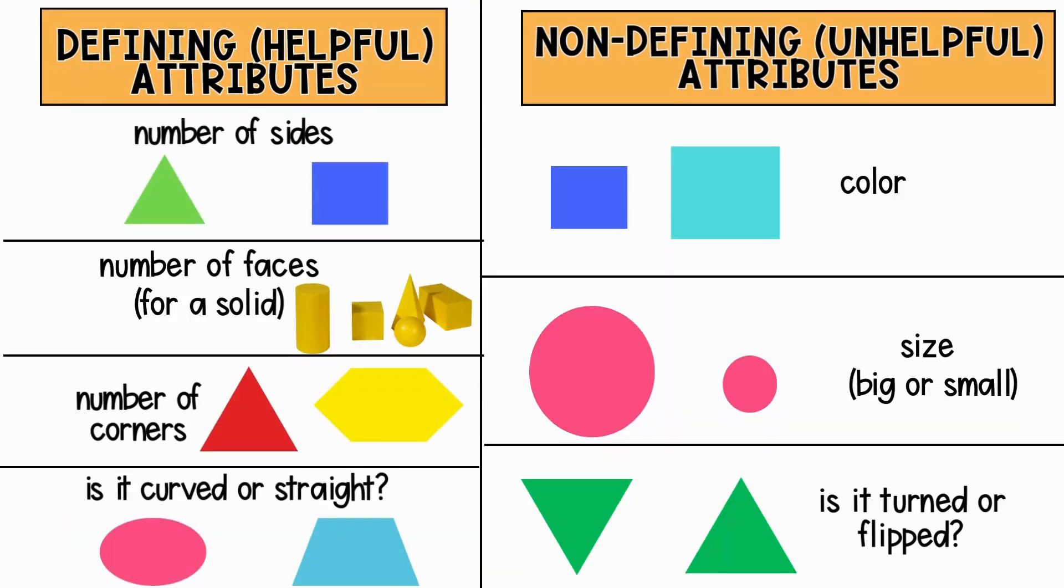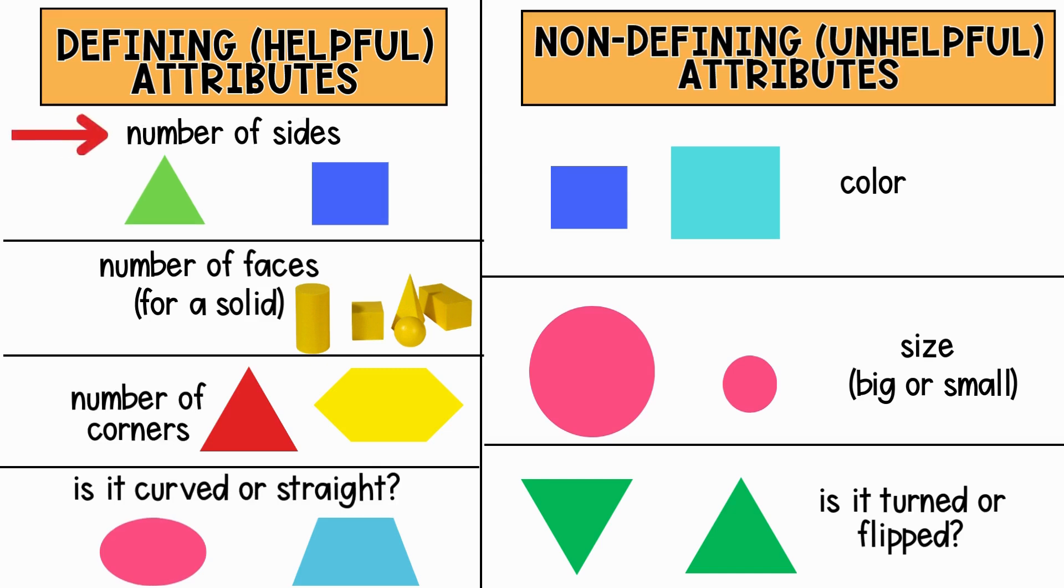This chart shows us a list of some defining or helpful attributes and some non-defining or unhelpful attributes. Some defining attributes are the number of sides, number of faces, number of corners, and whether the shape is curved or straight. These attributes help us figure out what the shape is.